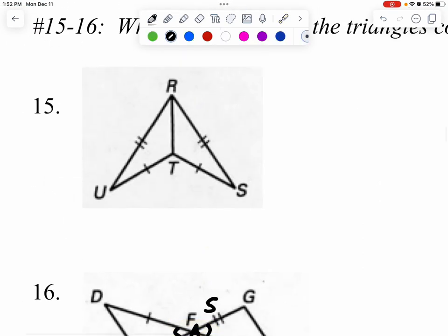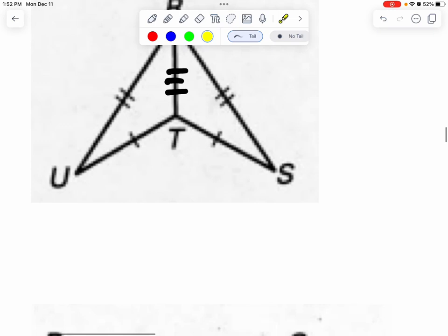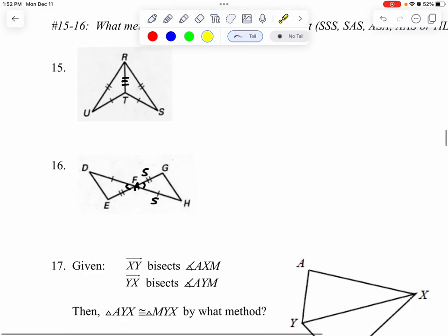And just like number 15, if you ever see a side that is being shared or touching between two triangles, I want you to mark it. This one already has one tick mark and two tick marks. So I'm going to put a three there, but it's sharing the same side. So you're allowed to mark those two things.